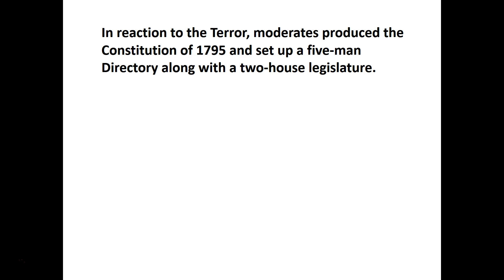After the Reign of Terror, there's a reaction to this overreach. Moderates in the National Convention are able to consolidate their power and come up with a new constitution in 1795, setting up yet another type of government — the Directory.